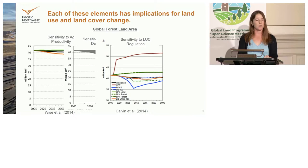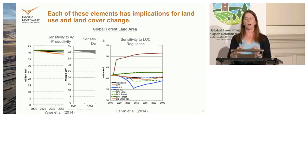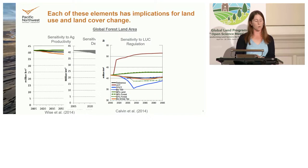Land use regulation also matters. Looking at different ways of treating the land surface: the scenario that increases forest is one where you're trying to optimize carbon storage on land, creating incentives to increase forest cover. At the other extreme, with no land use regulation and some incentives for bioenergy or other things, you get large declines in forest cover. How you regulate land and what incentives you place there really matter for the future of land use and land cover change.